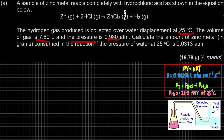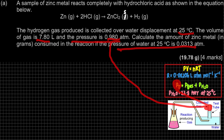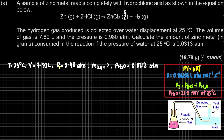So P_total = 0.98 atm. The question also states that the pressure of water, P_H₂O, is 0.0313 atm. Since all values are already in the same units, we can substitute directly. If the question does not give you P_H₂O, you can refer to your list of constants where the value is 23.8 torr at 25°C.